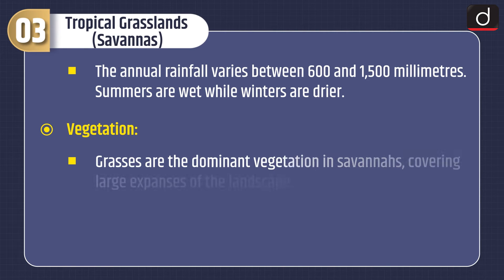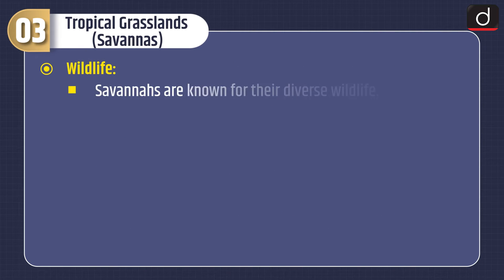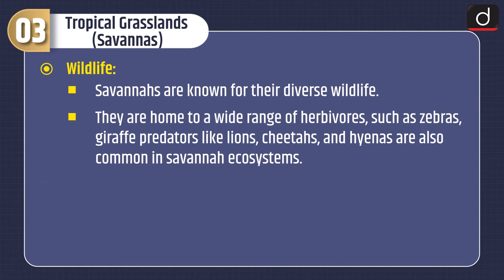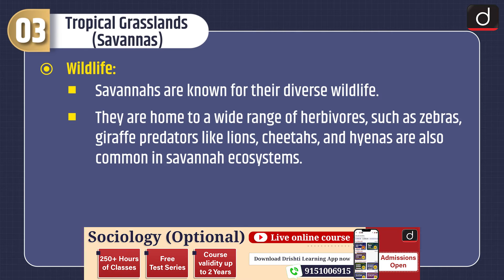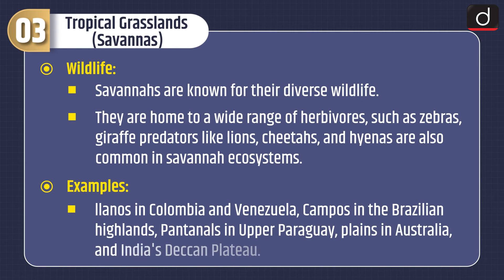Vegetation: grasses are the dominant vegetation in savannas, covering large expanses of the landscape. Savannas also feature scattered trees and shrubs. Wildlife: savannas are known for their diverse wildlife, home to a wide range of herbivores such as zebras and giraffes, and predators like lions, cheetahs and hyenas. Examples include Llanos in Colombia and Venezuela, Campos in the Brazilian highlands, Pantanal in Upper Paraguay, and plains in Australia and India's Deccan Plateau.